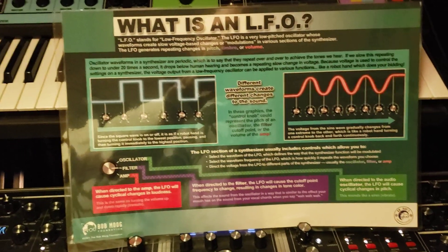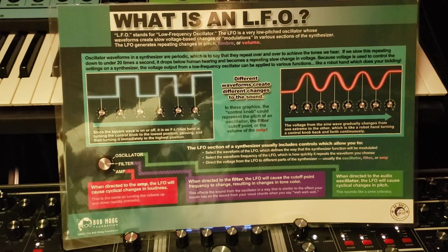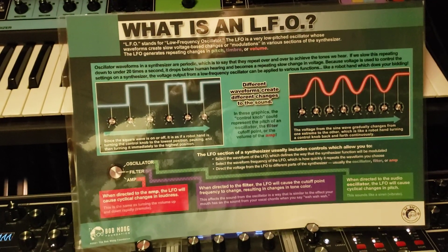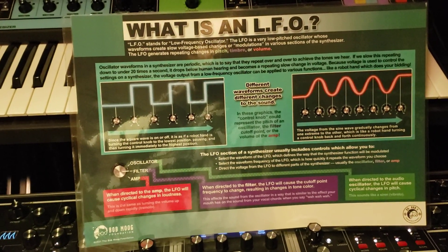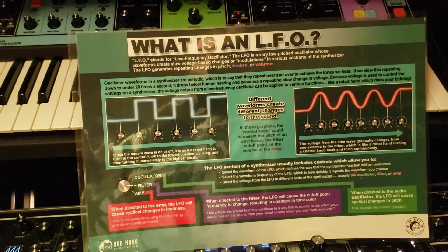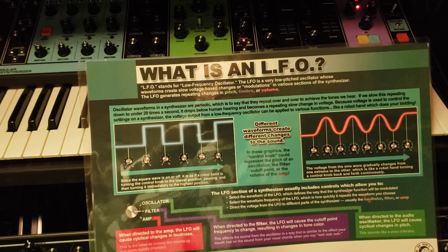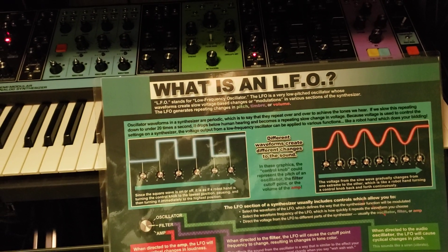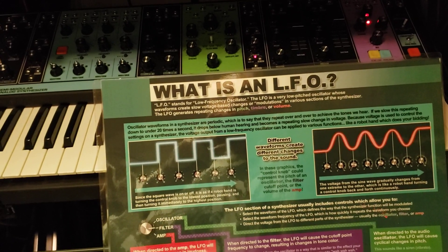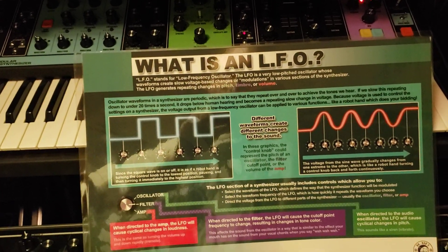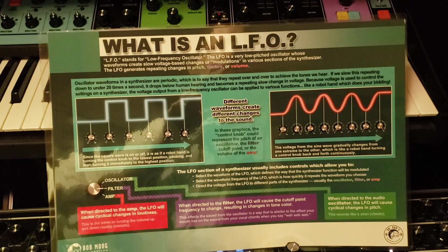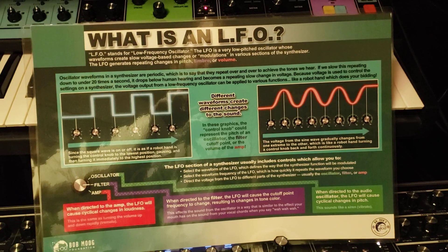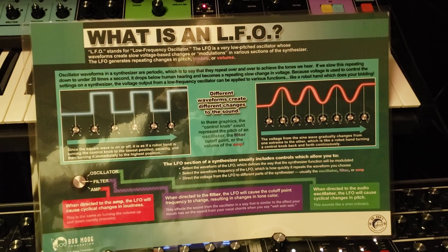Different waveforms create different changes to the sound. These graphics — the control knob — could represent the pitch of the oscillator, the filter cutoff point, or the volume of the amp. Since the square wave is on or off, it is as if the robot's hand is turning the control knob to the lowest position, pausing, and then turning it immediately to the highest position. The voltage from a sine wave gradually changes from one extreme to the other, which is like a robot's hand turning the control knob back and forth continuously.